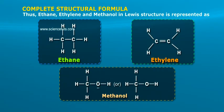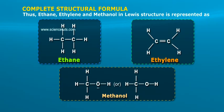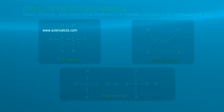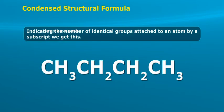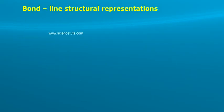Thus, ethane, ethylene, and methanol in Lewis structure is represented as shown. Condensed structural formula: indicating the number of identical groups attached to an atom by a subscript we get this bond.